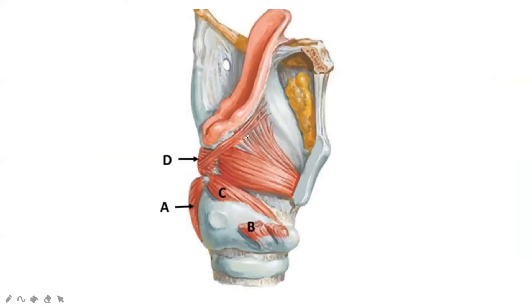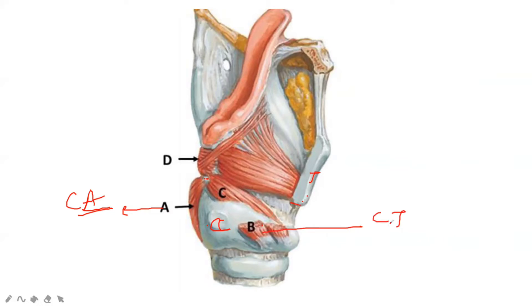Let's look at this laryngeal image. The marked muscles ABCD are: this is posteriorly — this is the cricoid cartilage, this is the thyroid cartilage, and this is the arytenoid. The muscle connecting the arytenoid and the cricoid is the cricoarytenoid. The muscle connecting cricoid with thyroid is the cricothyroid. The C muscle connecting cricoid with arytenoid — posteriorly — is the posterior cricoarytenoid, and laterally the lateral cricoarytenoid. The D muscle between the arytenoids only is the transverse arytenoid.